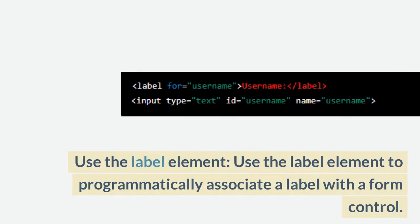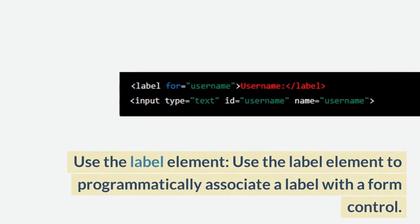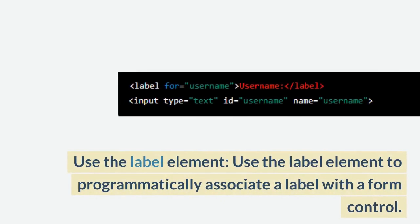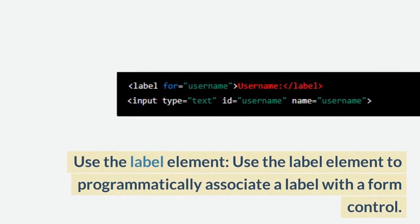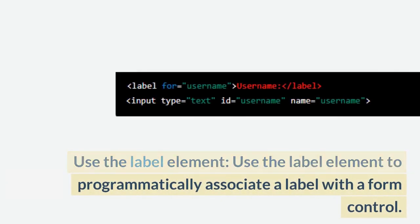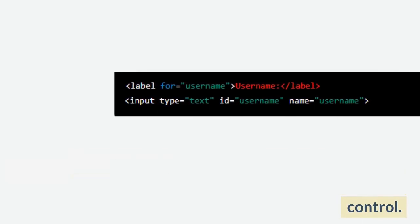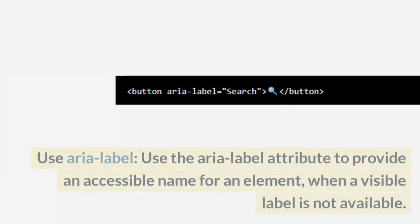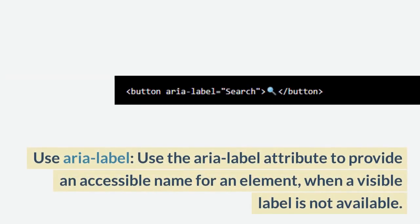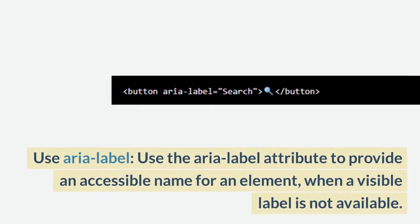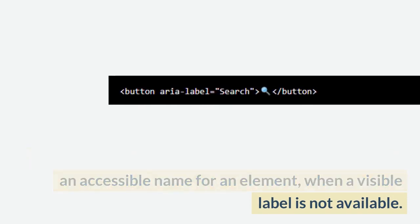Use the Label Element: Use the Label Element to programmatically associate a label with a form control. Use ARIA Label: Use the aria-label attribute to provide an accessible name for an element when a visible label is not available.